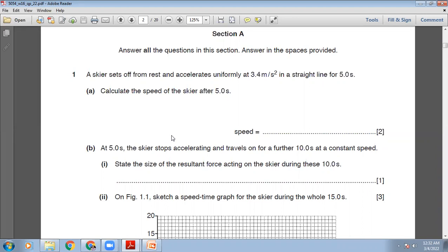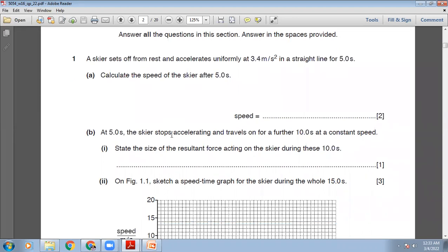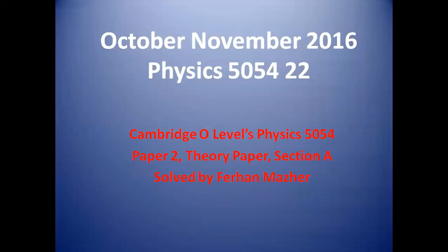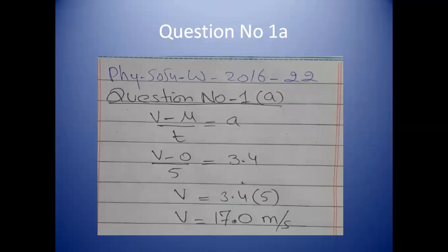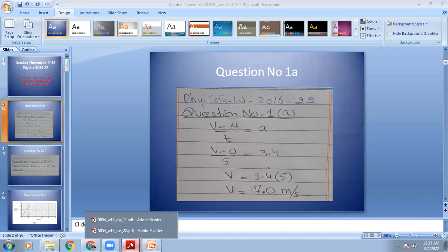We know the acceleration: uniform acceleration of 3.4 metres per second squared. We know the time taken. The initial velocity is 0 and the question is: what is the final velocity? Using the formula A = (V − U) / T, we can find V. Initial velocity U is 0. So V − 0 divided by 5 equals 3.4. Therefore V = 3.4 × 5 = 17 metres per second.